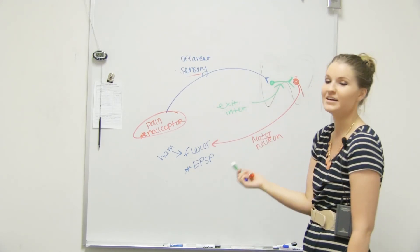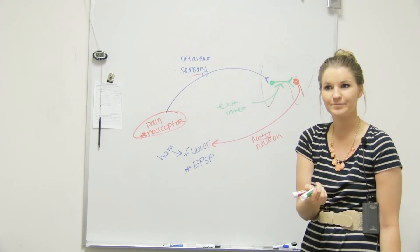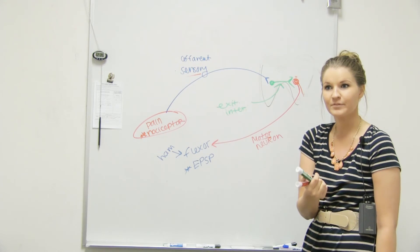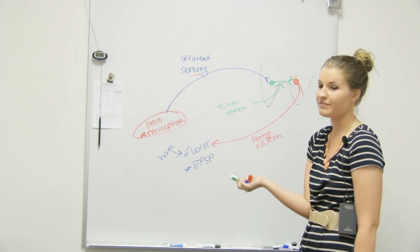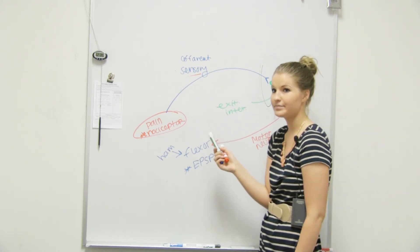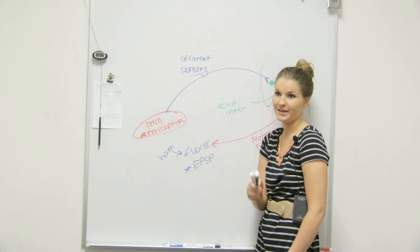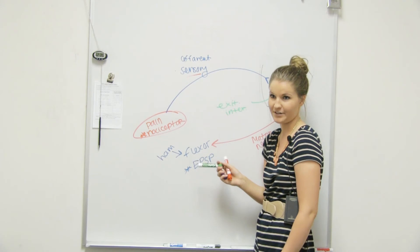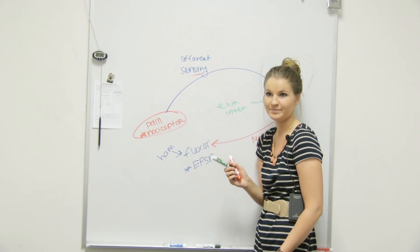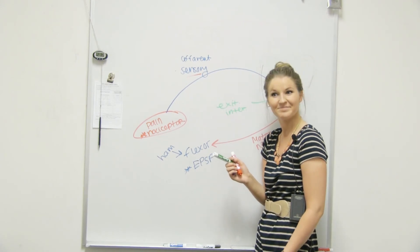What about our GTO — our Golgi tendon organ reflex? That would be inhibitory — an inhibitory interneuron.